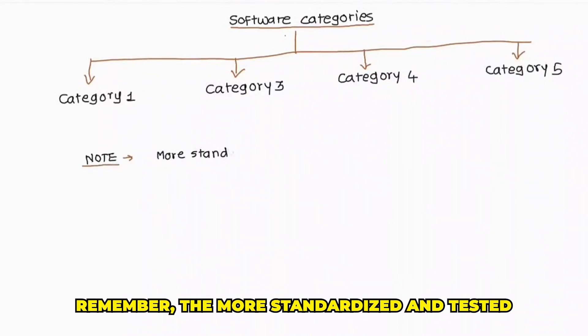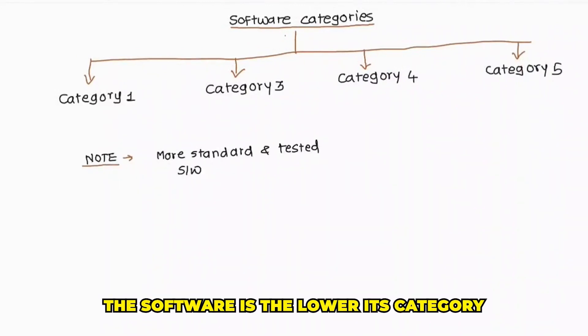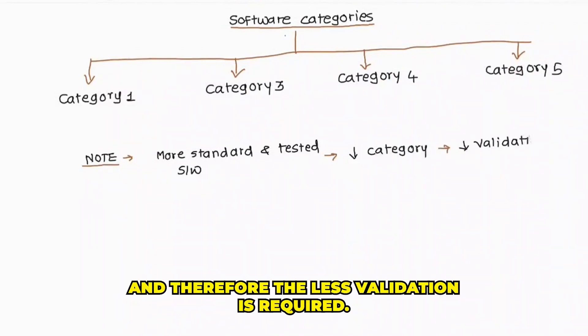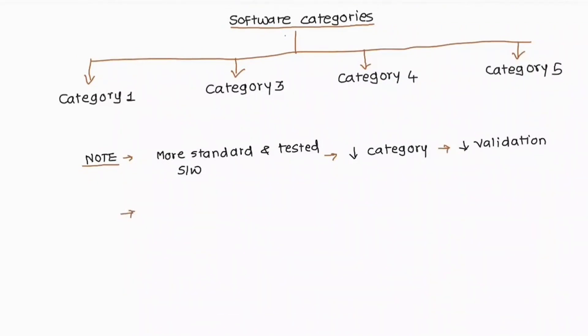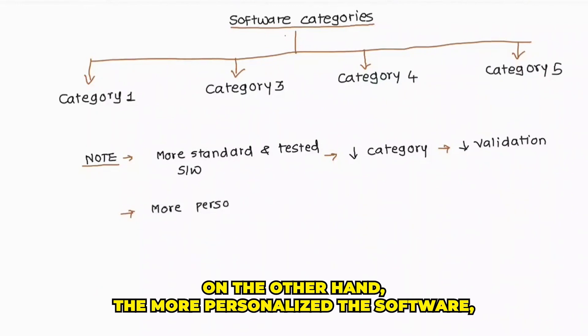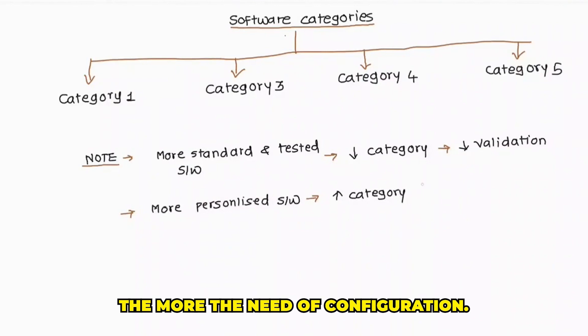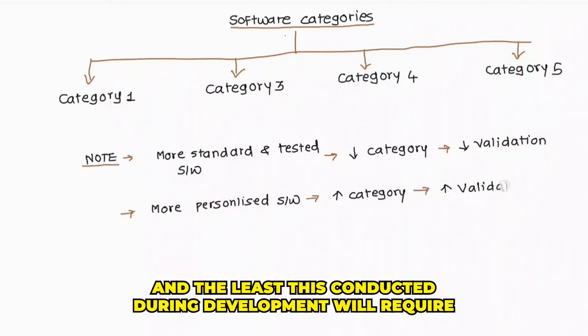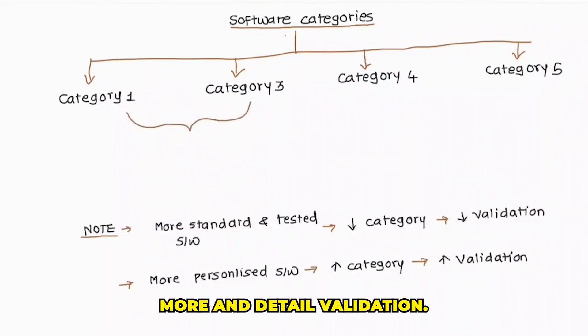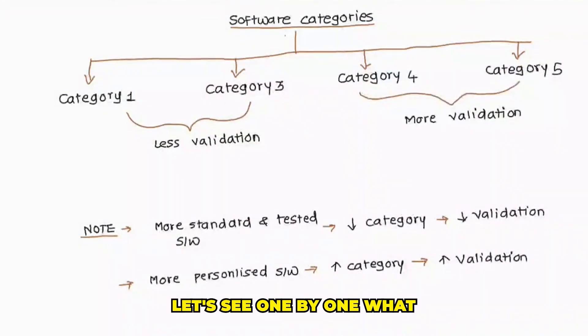Remember, the more standardized and tested the software is, the lower its category and therefore, the less validation is required. On the other hand, the more personalized the software, the more the need for configuration, and the least tested during development will require more and detailed validation.